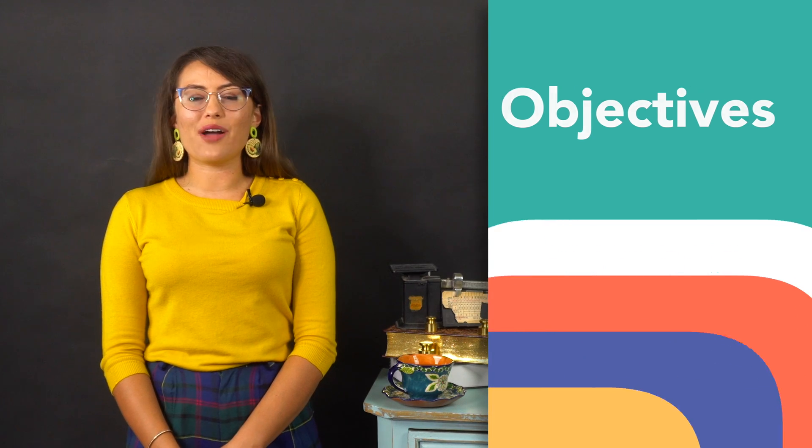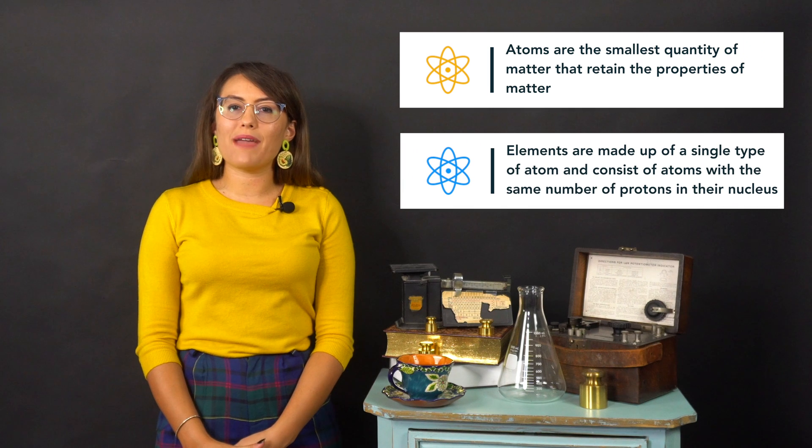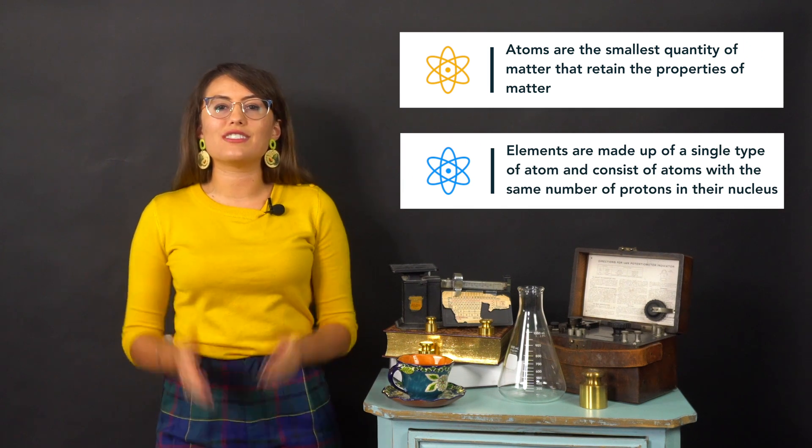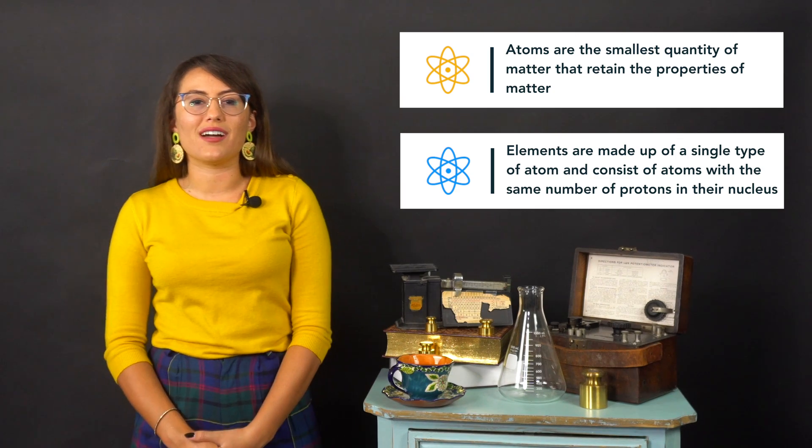Before we can begin our conversation, I want to make sure everyone is on the same page with some important definitions. Atoms are the smallest quantity of matter that retain the properties of matter, whereas elements are made up of a single type of atom, such as iron or helium, and consist of atoms with the same number of protons in their nucleus.